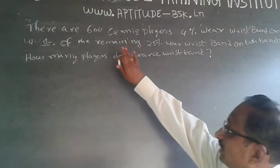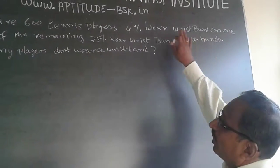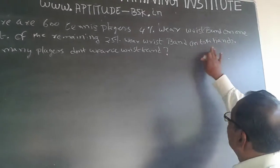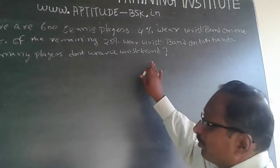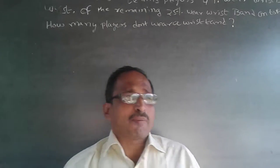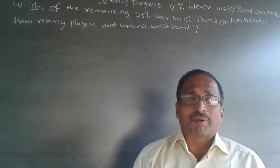The question is, there are 600 tennis players, 4% wear wristband on one wrist, of the remaining 25% wear wristband on both hands. How many players don't wear wristband? A simple quantitative question on percentages.